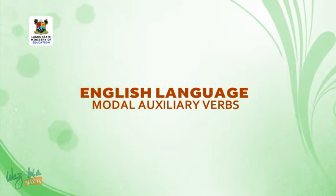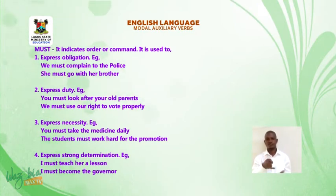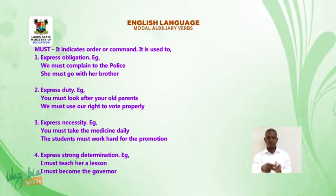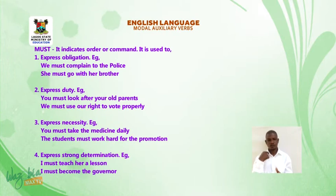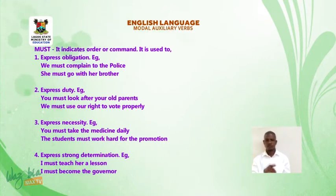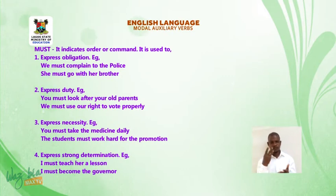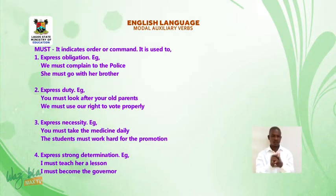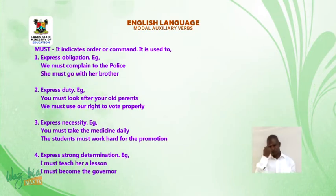Welcome to the last part of today's lesson. MUST (M-U-S-T). It indicates order or command. It is used to: one, express obligation — for example, we must complain to the police; she must go with her brother. Two, to express duty — you must look after your old parents; we must use our right to vote properly. Three, to express necessity — for example, you must take the medicine daily; the student must work hard for the promotion. Four, to express strong determination — for example, I must teach her a lesson; I must become the governor.